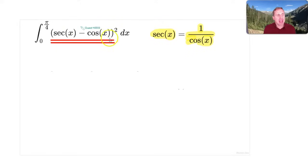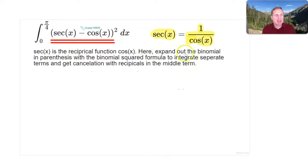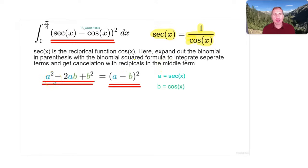Let's not forget that whenever we need to, we can replace sec(x) with 1/cos(x), because they are reciprocal functions of each other. So how do we expand a binomial squared? So sec(x) is the reciprocal function of cos(x), but here we're going to expand out the binomial in parentheses with the binomial squared formula.